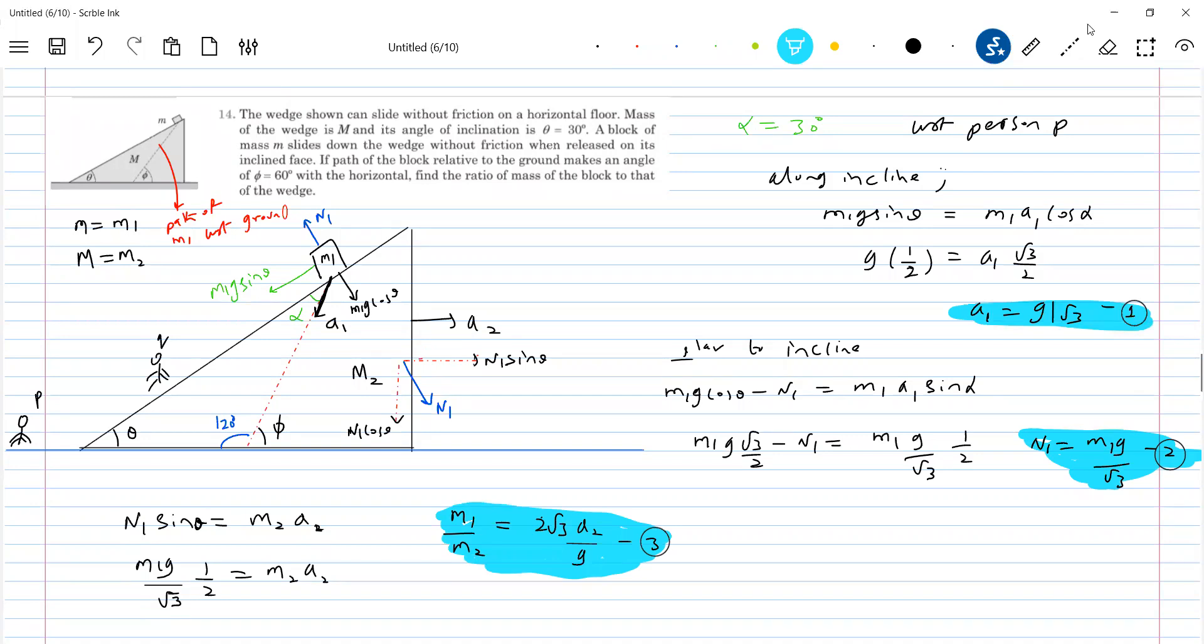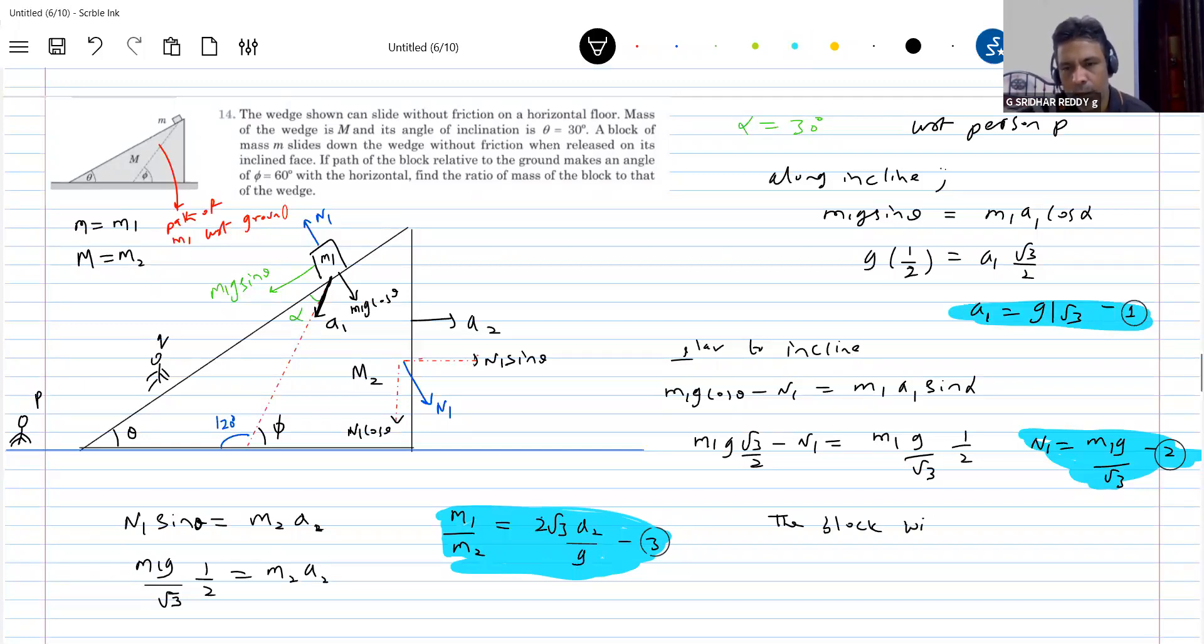Wedge constraints, sir. Yeah. We have to apply the wedge constraints. So what's happening to the block? Block will not lose contact from the wedge. So what constraint equation can you bring? Acceleration along common normal must be equal. Acceleration perpendicular to incline of them must be equal. Any reason for that? This N1 is non-zero. This is the reason. What should I write? So constraint equation.